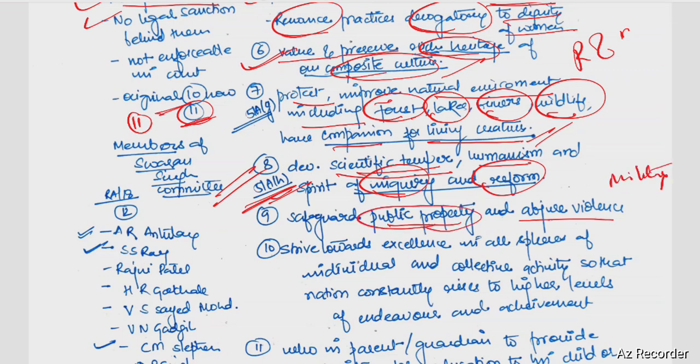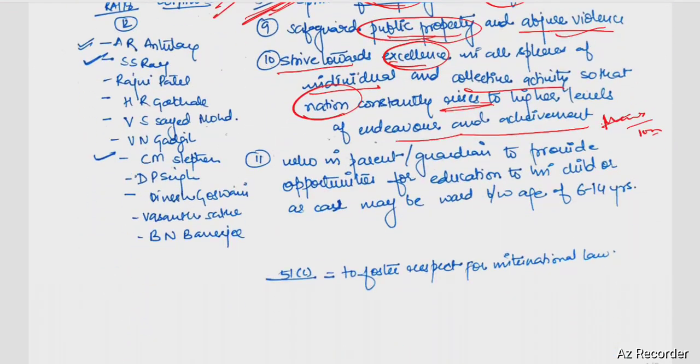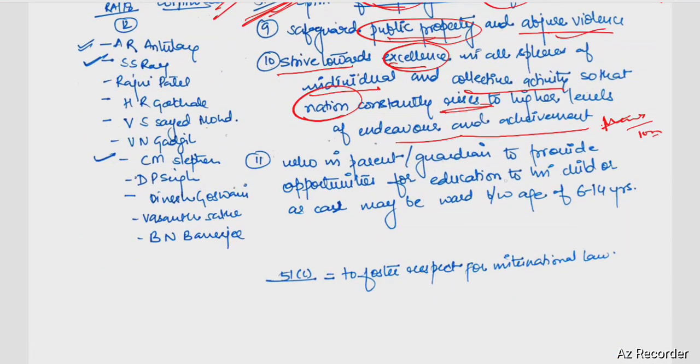We have to save public property, abjure violence. If you destroy a restaurant tomorrow, what do we do? We have to protect. Strive towards excellence on the individual and collective level so that we can work that our nation constantly rise and achieve higher and more achievements.